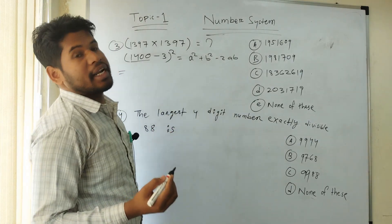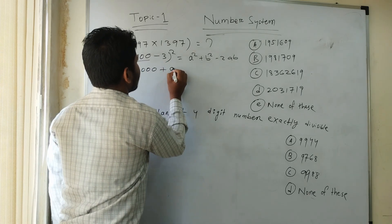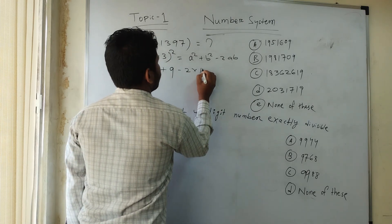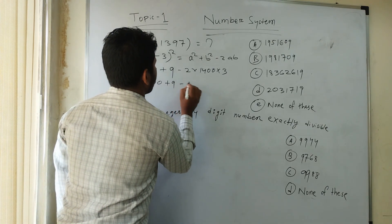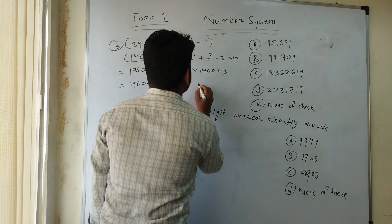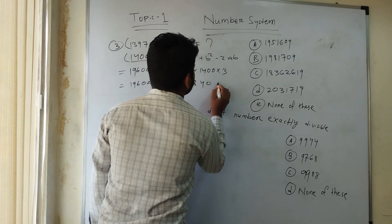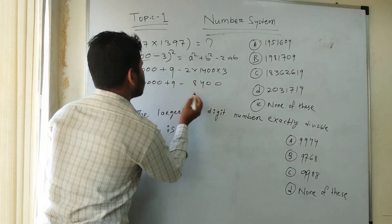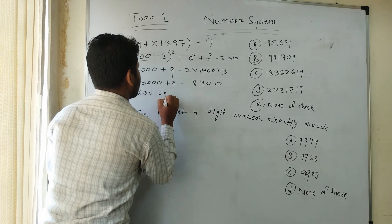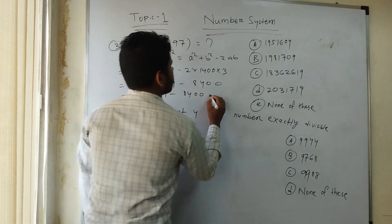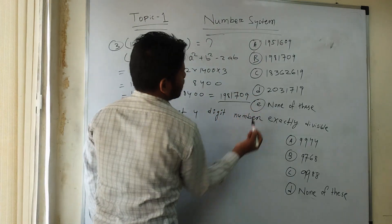Applying the formula: A squared is 1,400 squared equals 1,960,000. B squared is 3 squared equals 9. And minus 2 into 1,400 into 3 equals 8,400. So the result is 1,960,000 plus 9 minus 8,400, which gives 1,951,609. Wait — that means we get 1,951,709. So the answer is option B.